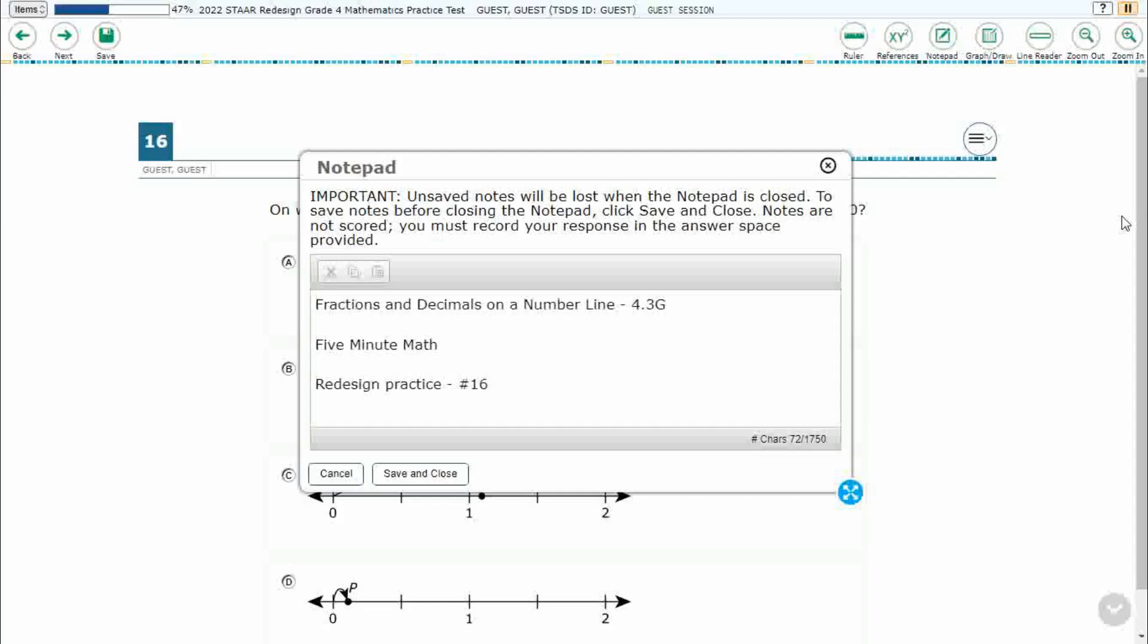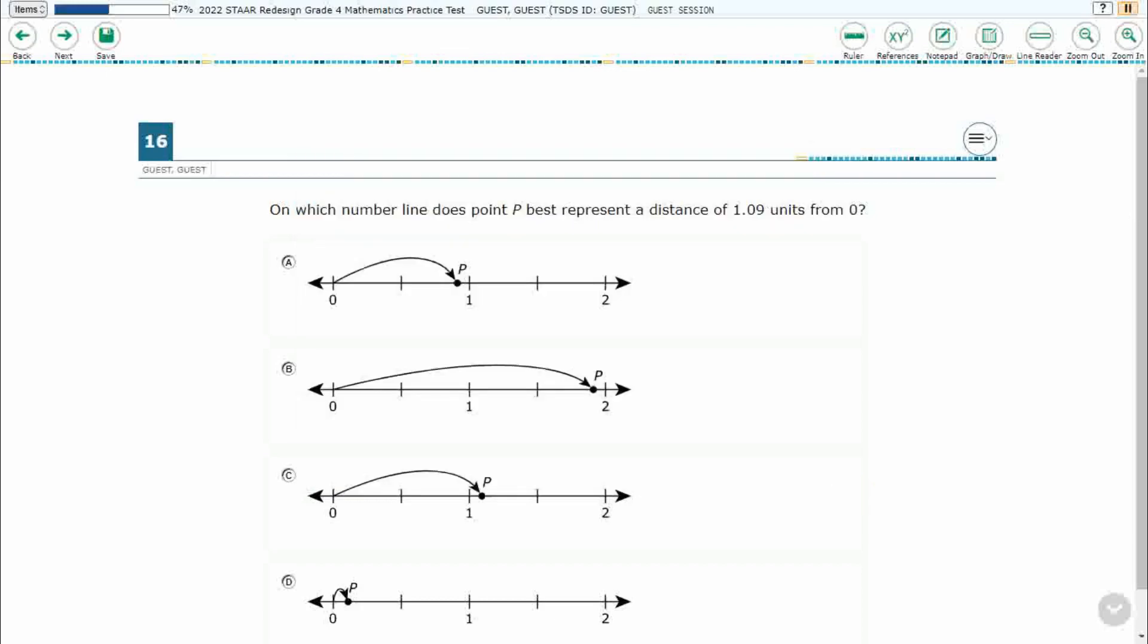Hello and welcome to 5-Minute Math. Today we are looking at the fourth grade concept of fractions and decimals on a number line. This is standard 4.3G in the great state of Texas and we are using item number 16 off the Redesign Practice Online Start Test.